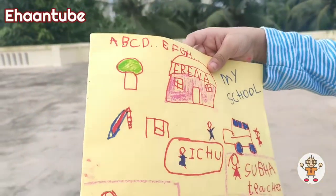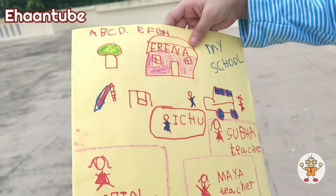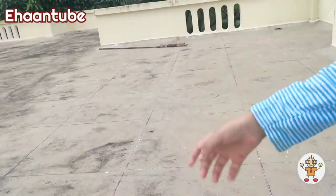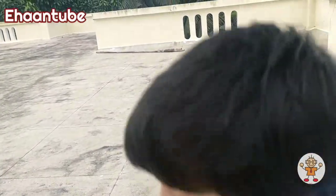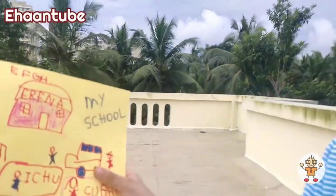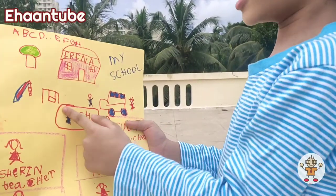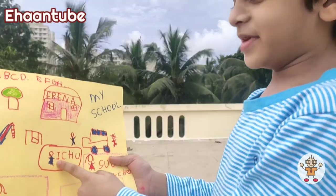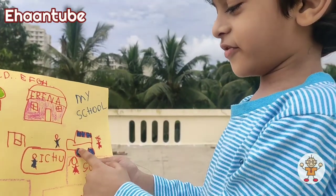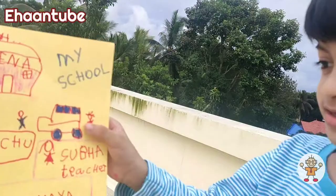A, B, C, D, E, F, G and H — and there is a preschool, my school right here, and a slide and a swing and me right here.